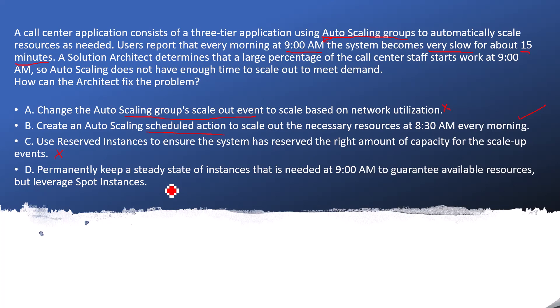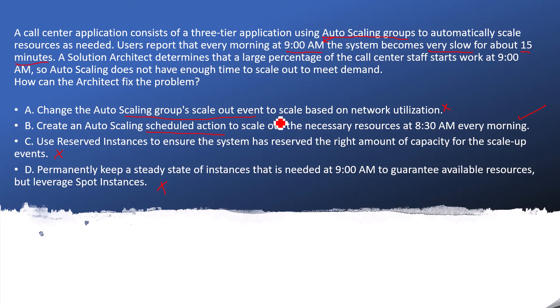Answer D: permanently keep a steady setup — the same size needed at 9 a.m. — to guarantee available resources but leveraging spot instances instead. This is wrong; it's trying to confuse you. When using an auto-scaling group, we can simply go with the scheduled action: specify how many EC2 instances I need available at 9 a.m. by doing the scheduled action at 8:30 a.m. That will work. So B is the correct answer.